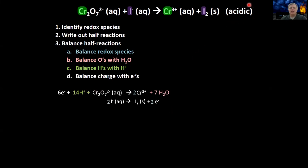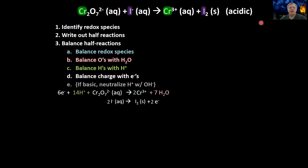There's one more step we get to skip because this is an acidic solution: in a basic solution we'd neutralize all these protons with OH-minus — I'll give you an example of that on the next slide. But since this is acidic, we skip that step. Next, we make sure the top and bottom reactions can be added together so all electrons cancel out. We'd need to multiply — the top reaction has 6 electrons and the bottom has 2. We can't divide the top reaction by three since that would give non-integer values, so we multiply the bottom reaction by three.